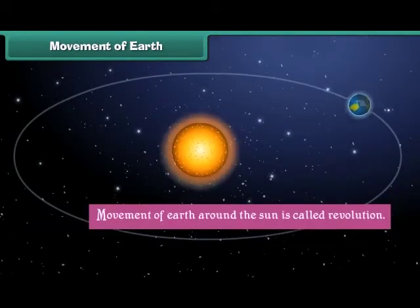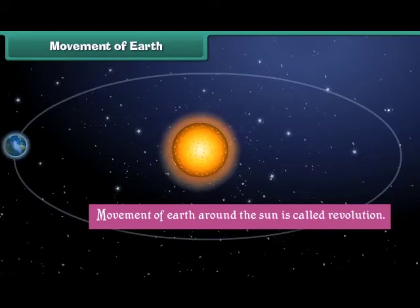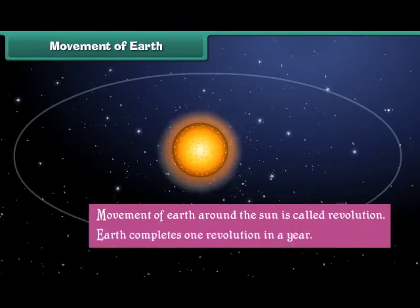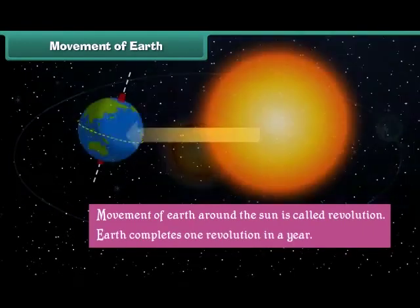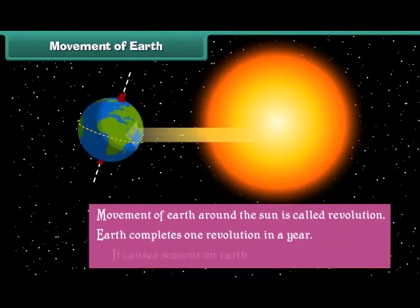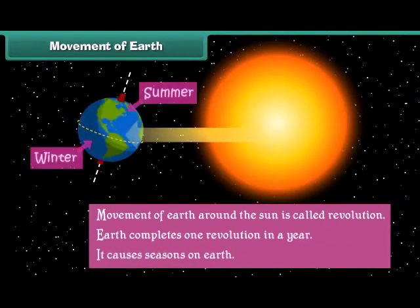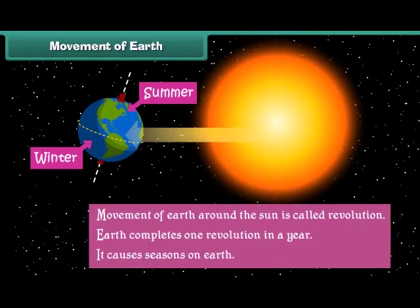Movement of Earth around the Sun is called revolution. Earth completes one revolution in a year. It causes seasons on Earth.